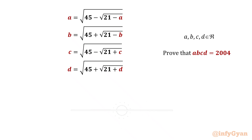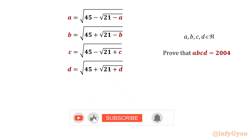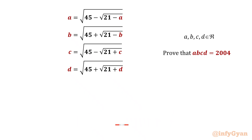Hello my dear friends, welcome back to InfiGam. Today in this video, we are going to solve one very interesting question from system of equations. Given that A, B, C and D are real numbers, then we have to prove that ABCD is equal to 2004. So let us get started.